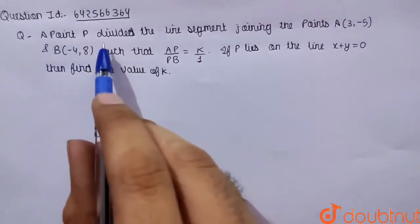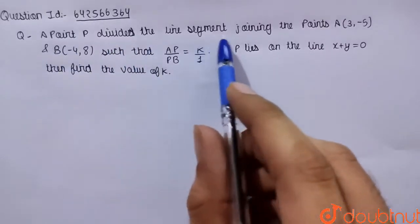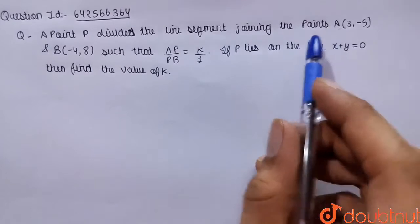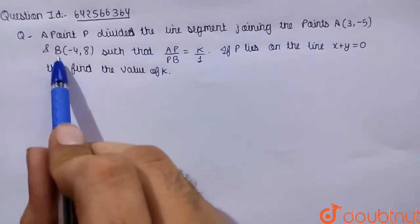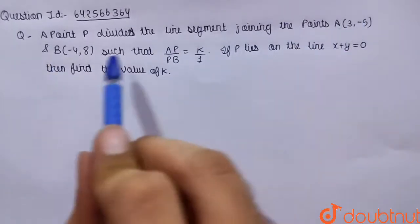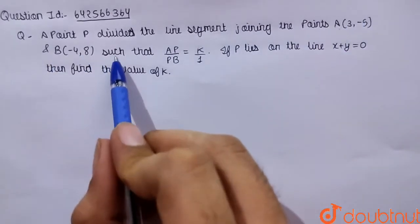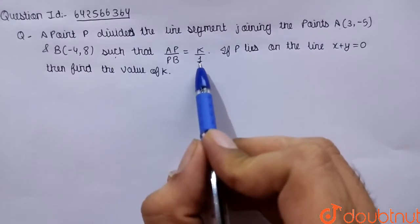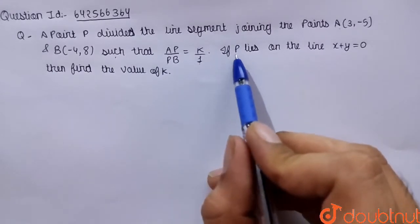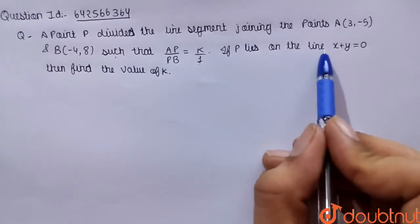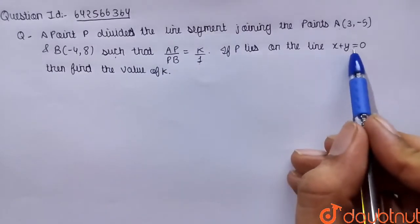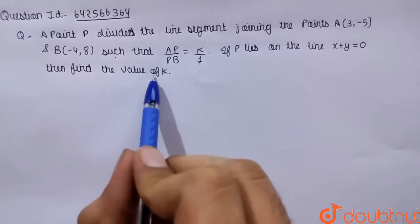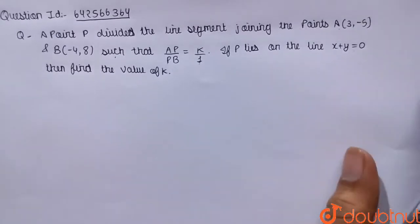The given question is: a point P divides the line segment joining the points A and B — coordinates are given — such that AP by PB is equal to k by 1. If P lies on the line x plus y equals to 0, then find the value of k.